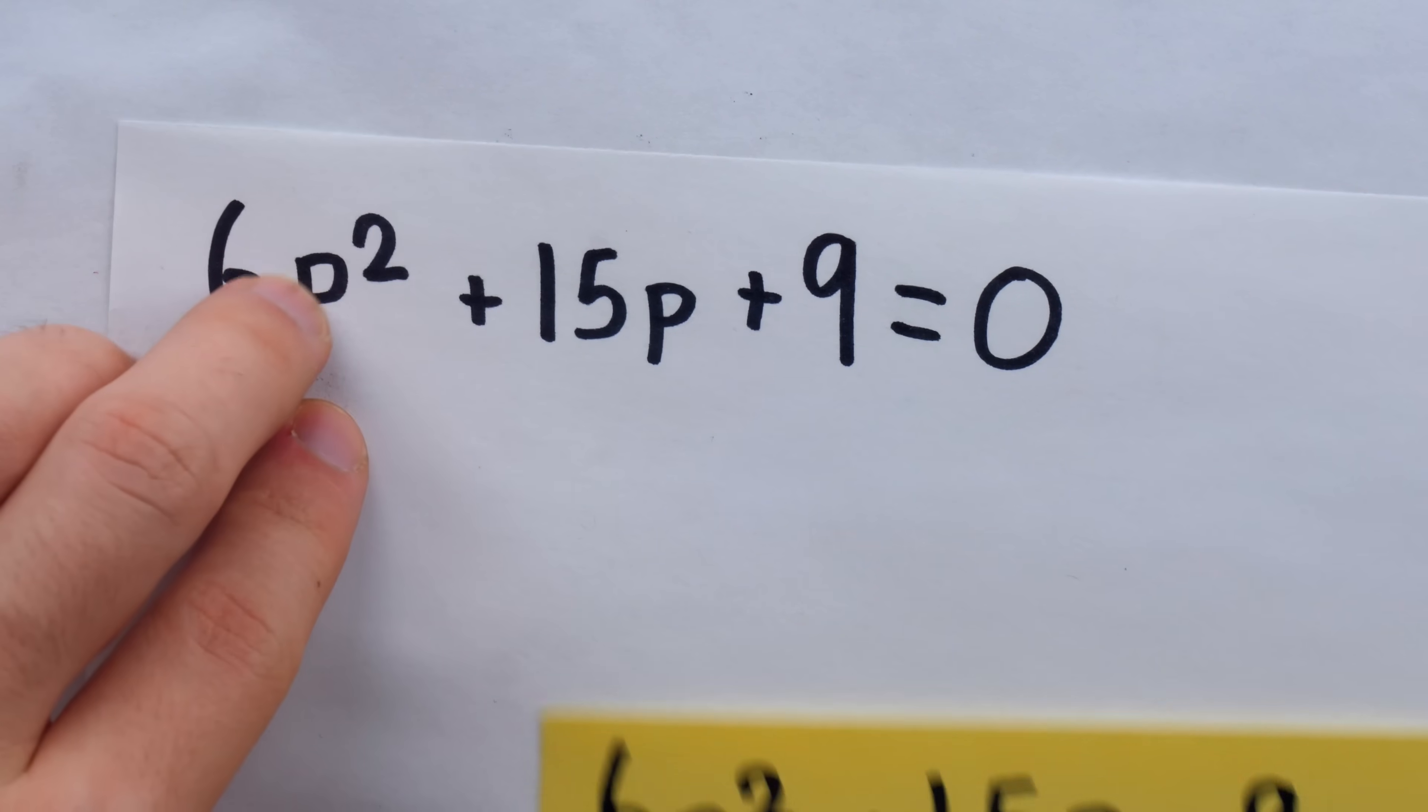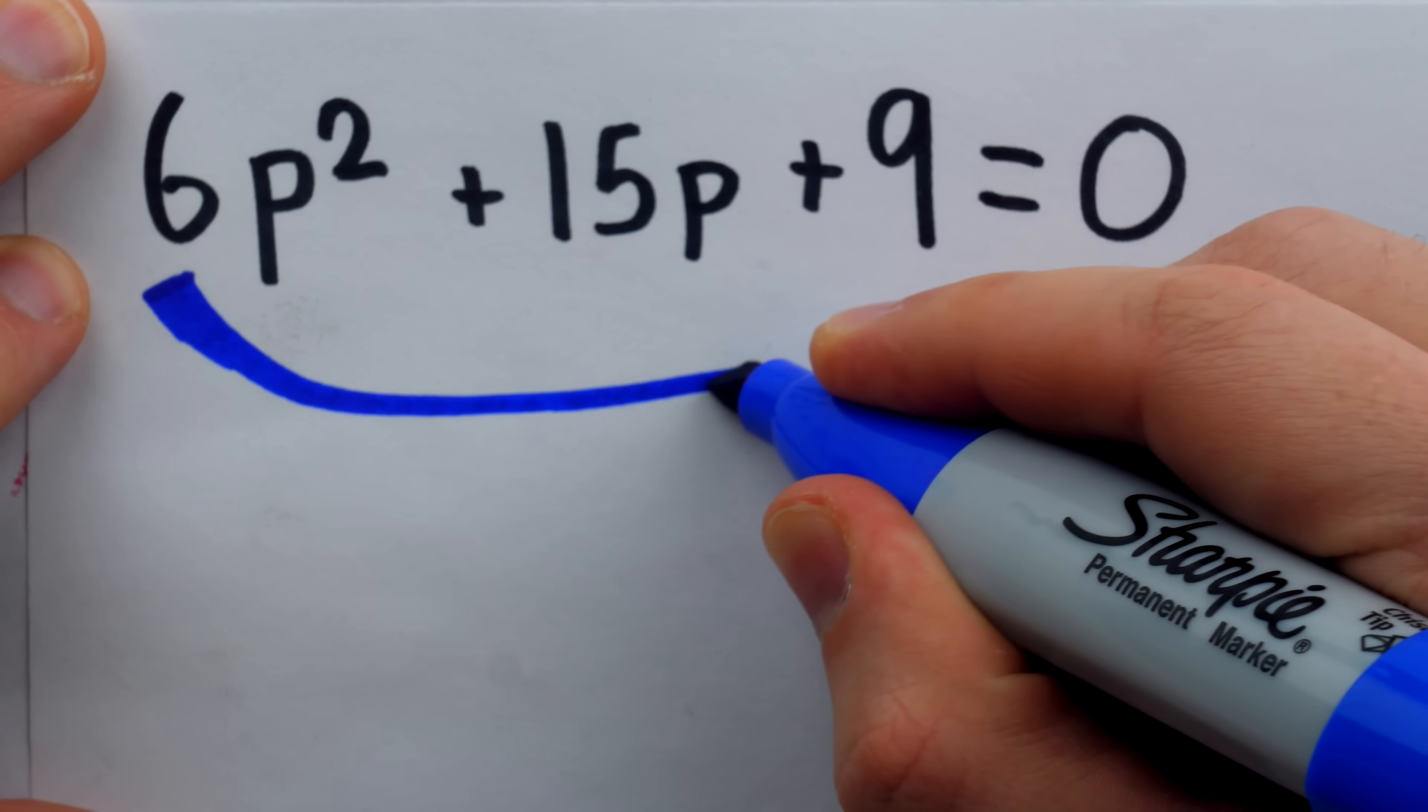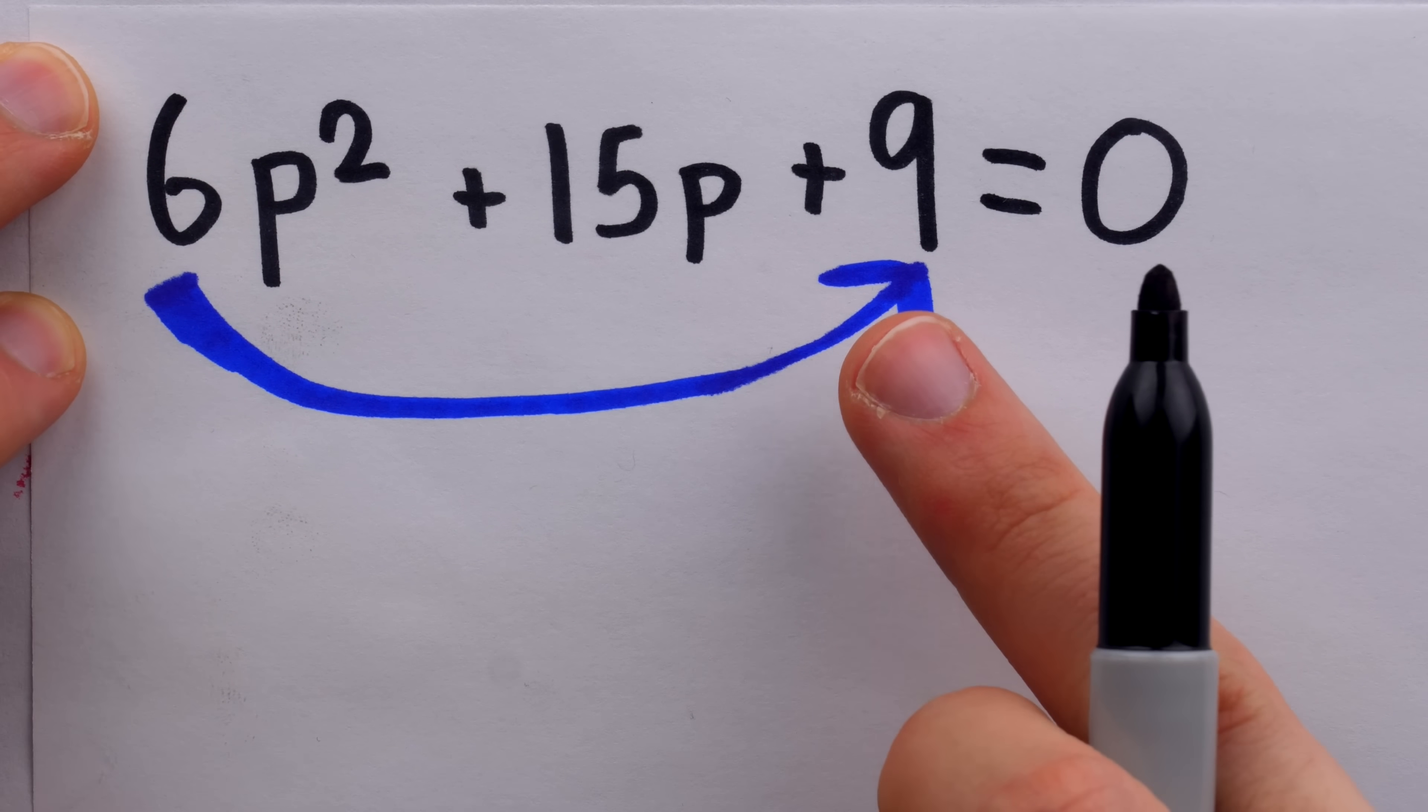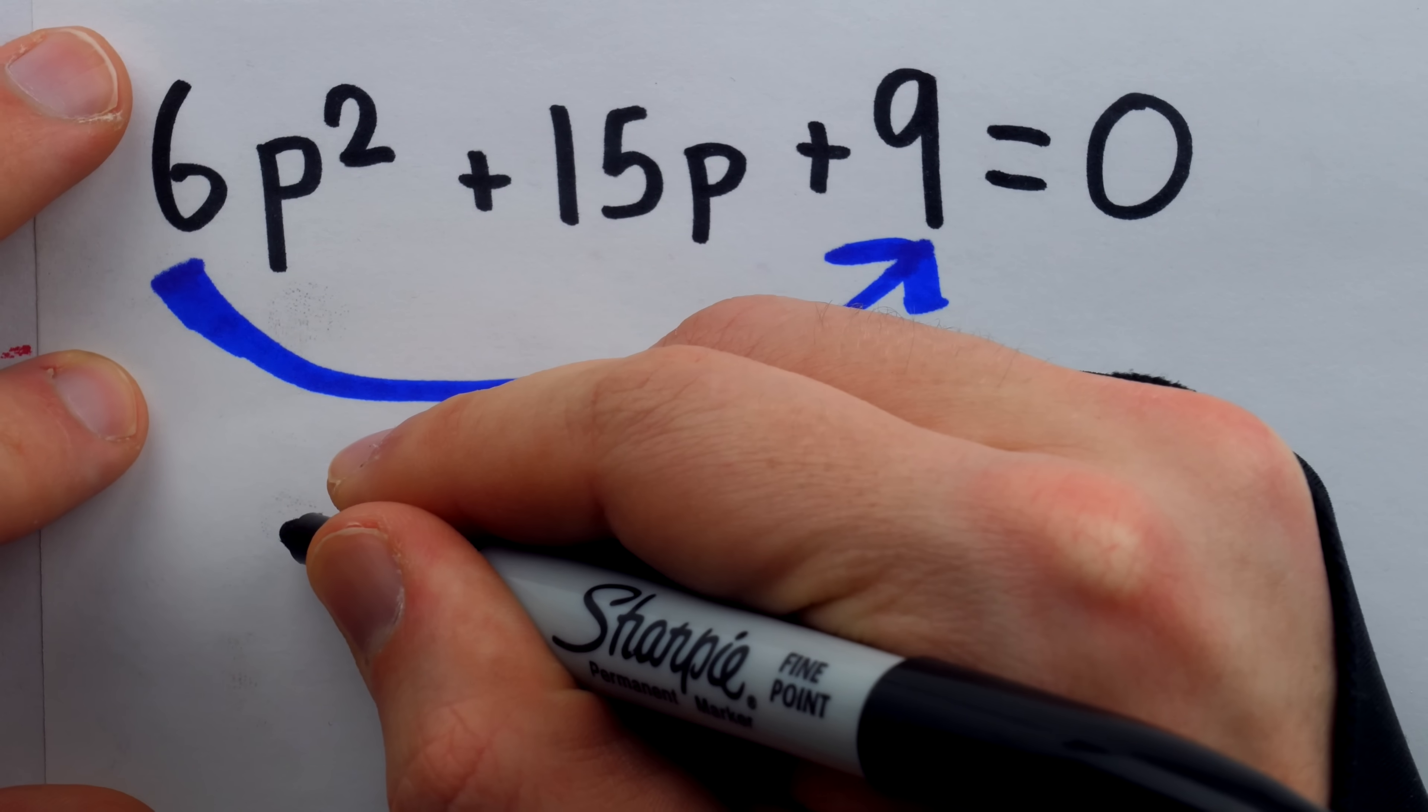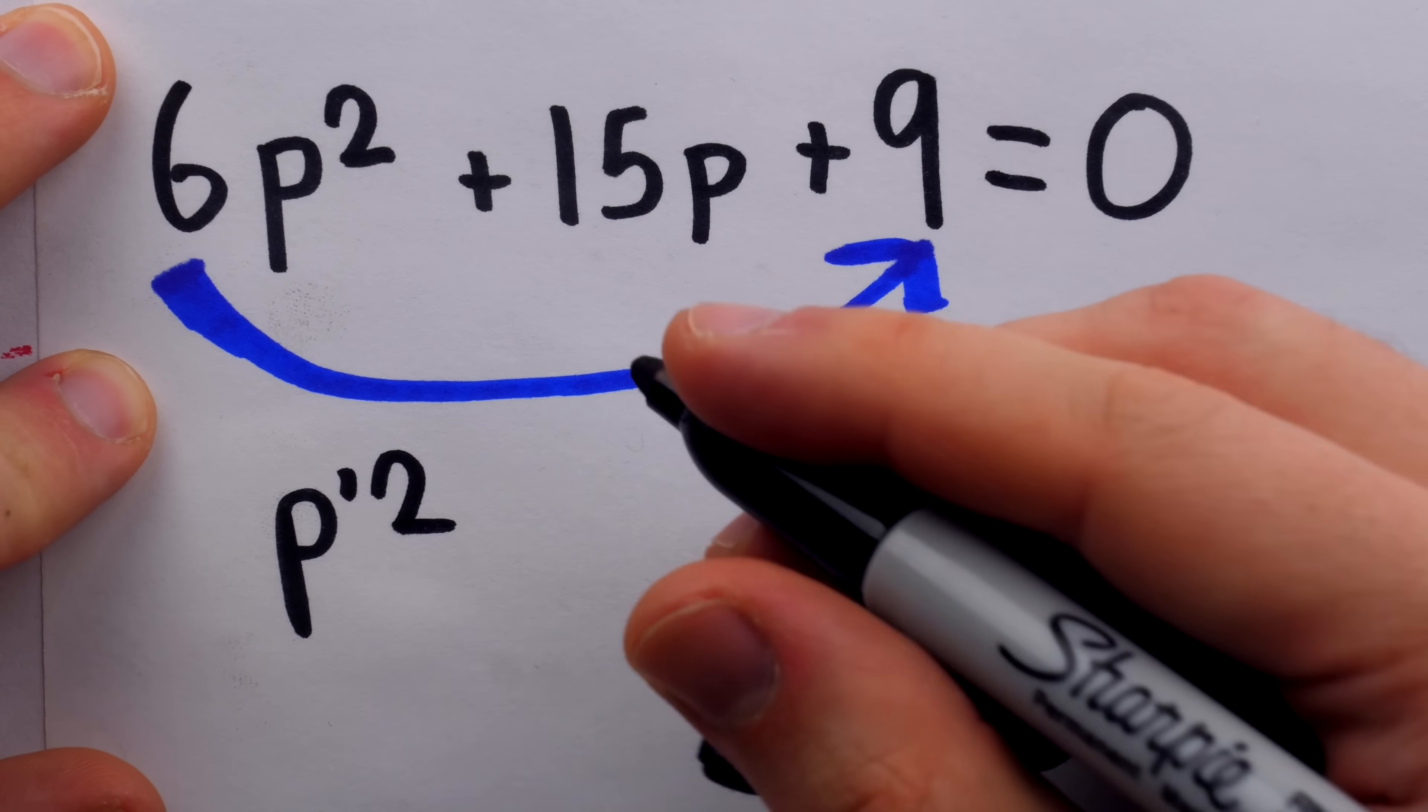So here's what you can do instead with our pretty cool trick. All we have to do is take that pesky leading coefficient and hit the constant term with it. Multiplying that constant 9 by that coefficient of 6 will give us 54. So then our new equation is going to be p, let's say prime squared because we are now changing the equation, so I'm just going to call it p prime.